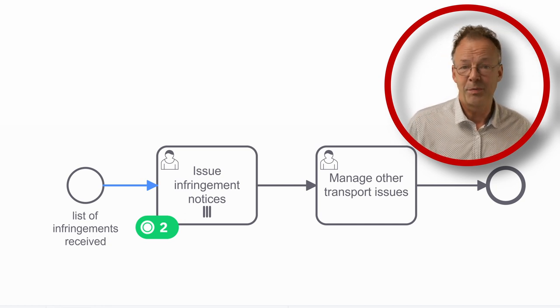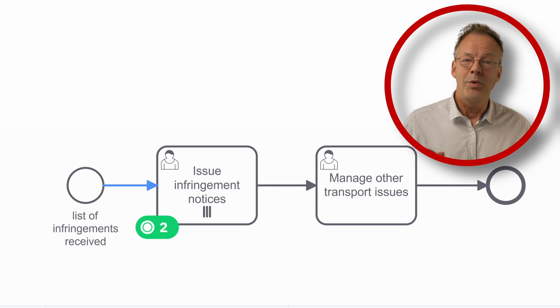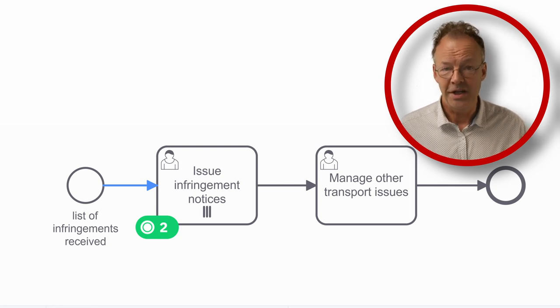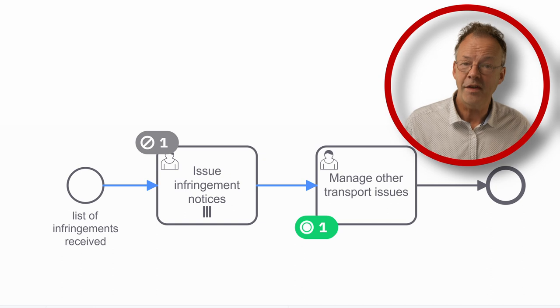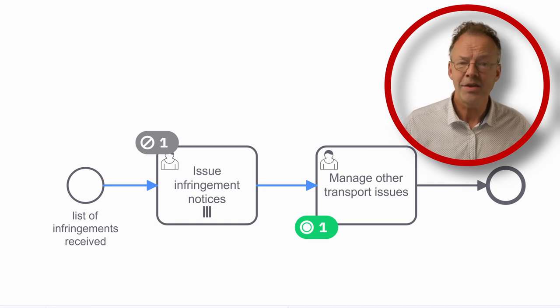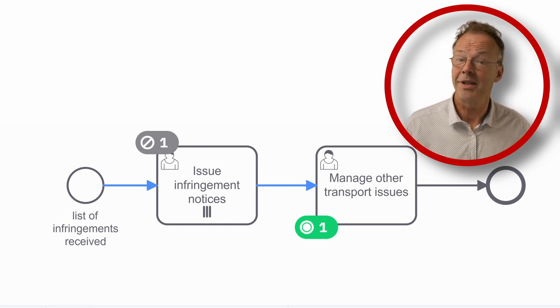When we complete the first multiple instance work item, we get the situation as shown here. We can now manage other transport issues, but the second multiple instance work item has been cancelled.